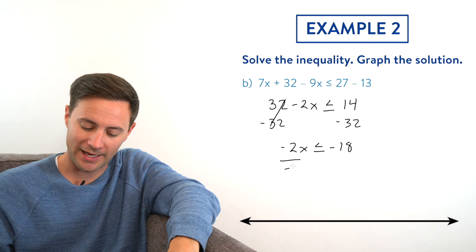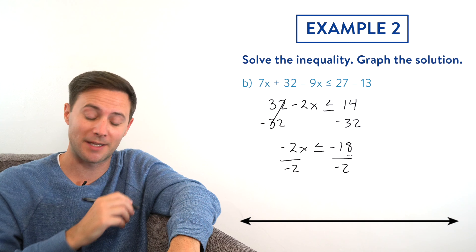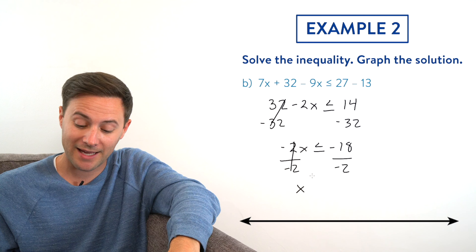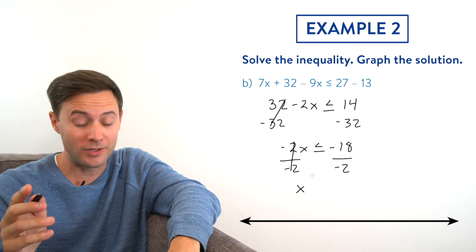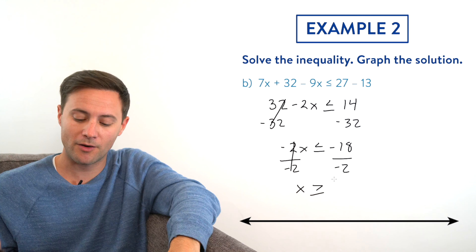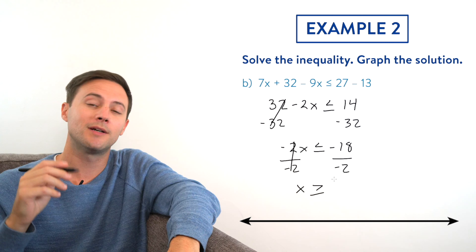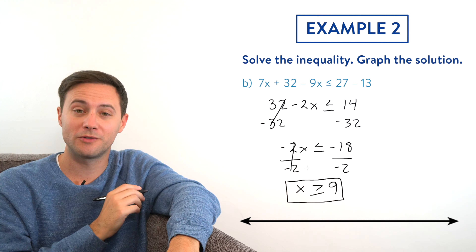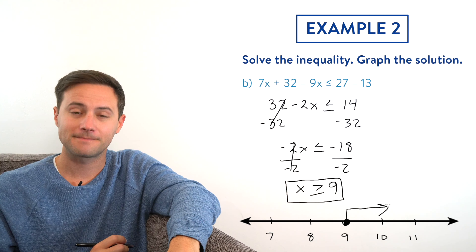Now let's solve. First I need to get rid of that 32 — it's a positive 32, so to get rid of it we subtract 32 from both sides. That goes away and I'm left with negative 2x on the left side, still less than or equal to, because we just subtracted — we didn't multiply or divide by a negative number, so we don't need to switch yet. 14 minus 32 gives me negative 18.